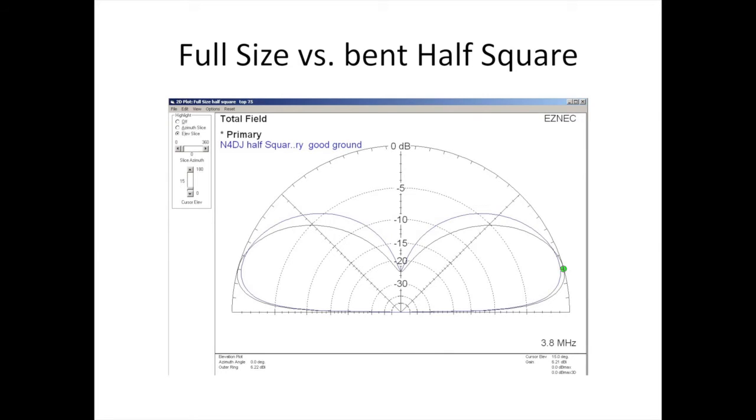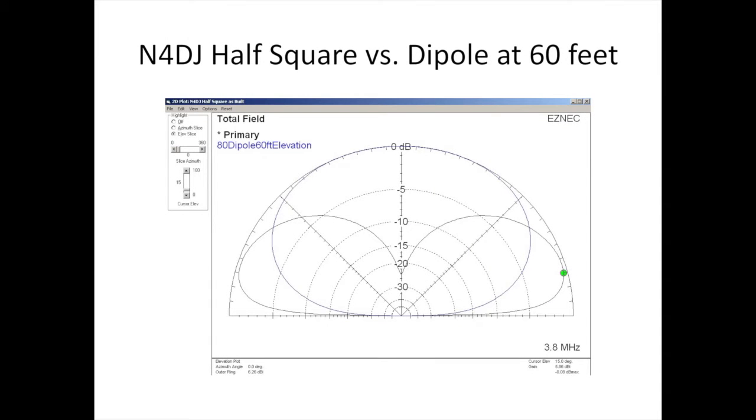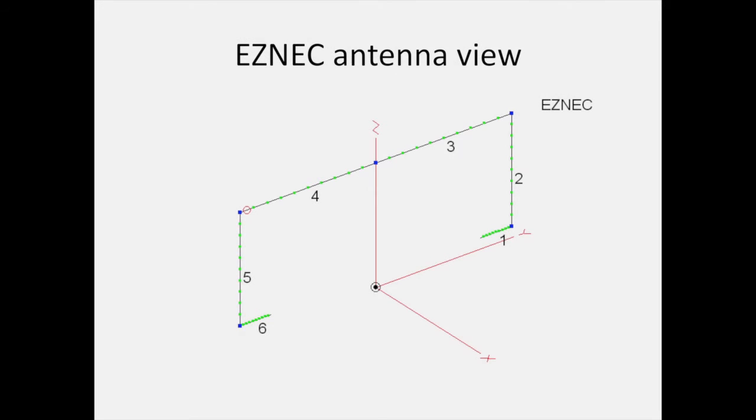This shows a full size half square pattern, elevation pattern versus a bent half square. There's not a whole lot of difference in those two patterns, mainly because there's very low current at the ends of the antenna where we bent it back. This shows my half square versus the dipole at 120 feet. I have a little bit better lower angle gain than the dipole at 120 feet. However, the dipole at 120 feet is a little bit better at some of the higher angles. This shows that this is a no-brainer. The N4DJ half square versus a dipole at 60 feet. The half square wins at almost any elevation angle. Useful for DX.